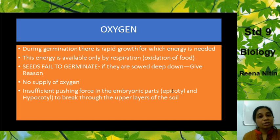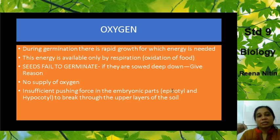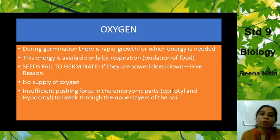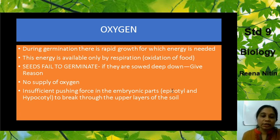Seeds fail to germinate if sown deep into the ground. If you dig deep into a pot and sow the seed there, it will be unable to germinate. The reason is that deep down there is insufficient supply of oxygen, and also insufficient pushing force in the embryonic parts — the growing embryo does not have enough energy to push through and break through the upper layers of soil. So there are two reasons: insufficient oxygen supply deep down, and insufficient pushing force of the embryonic parts.